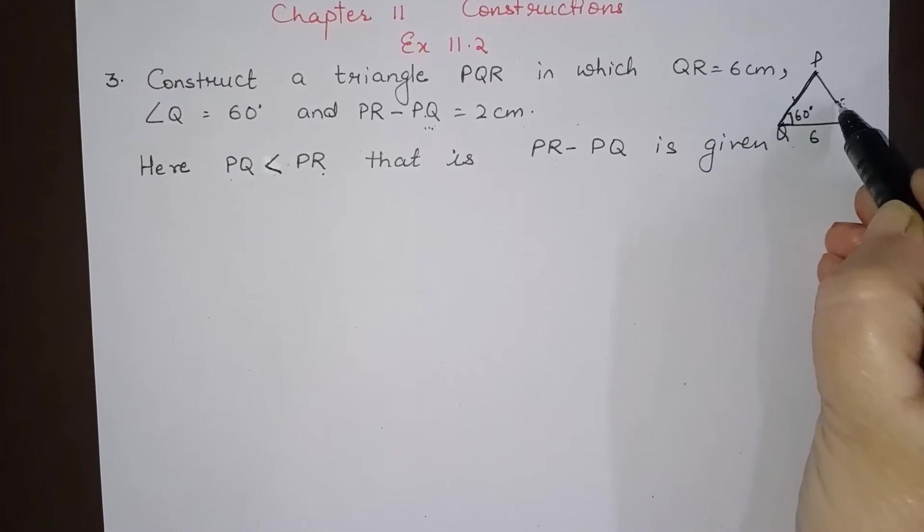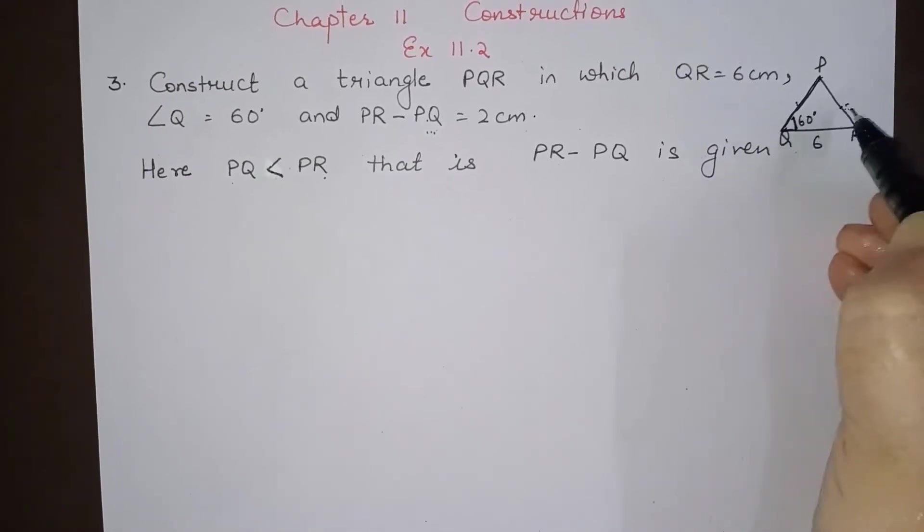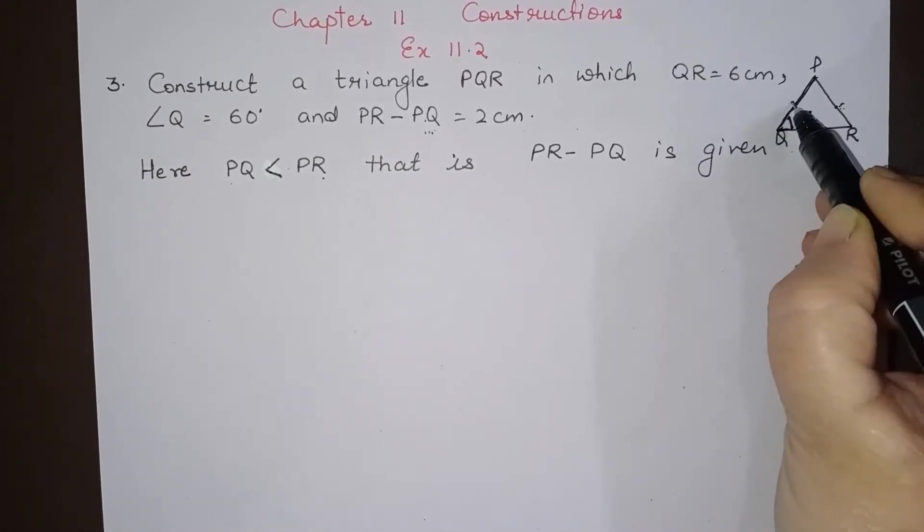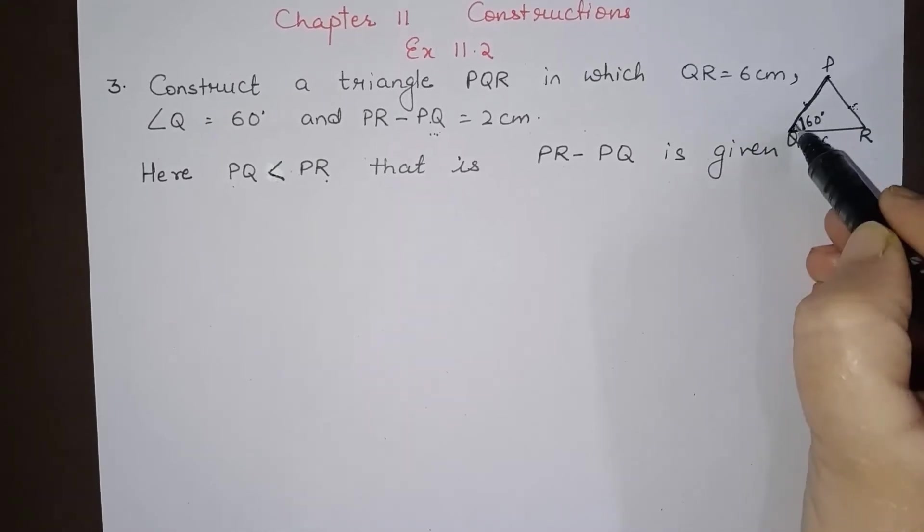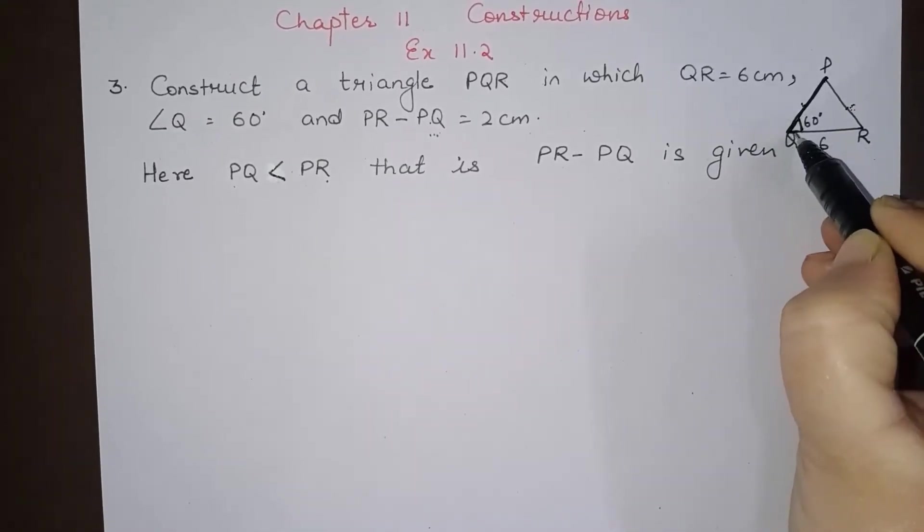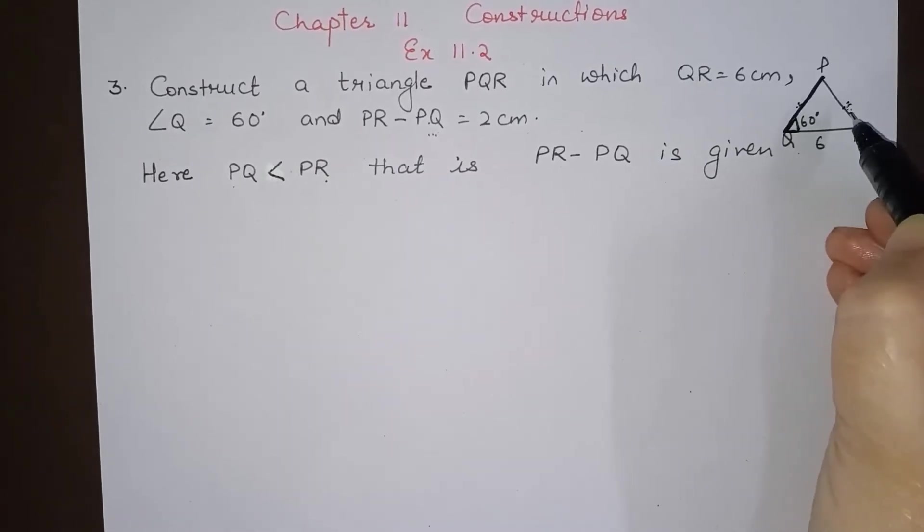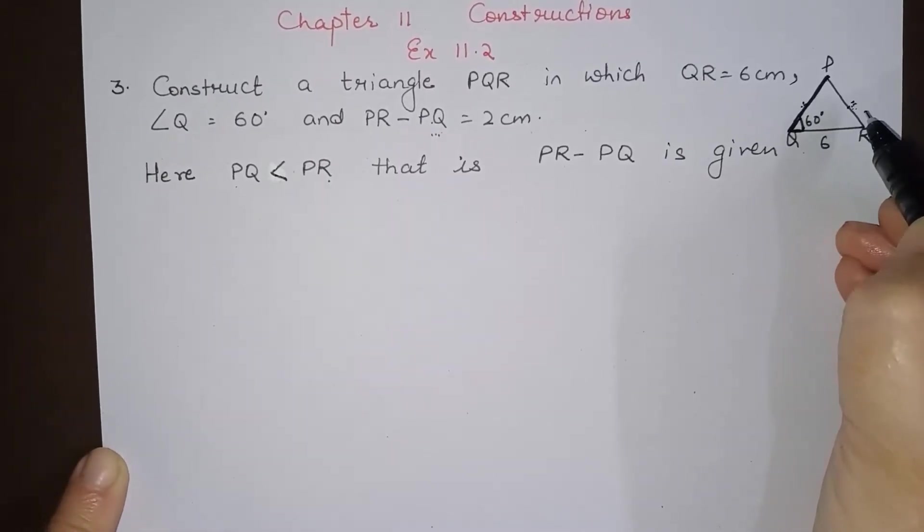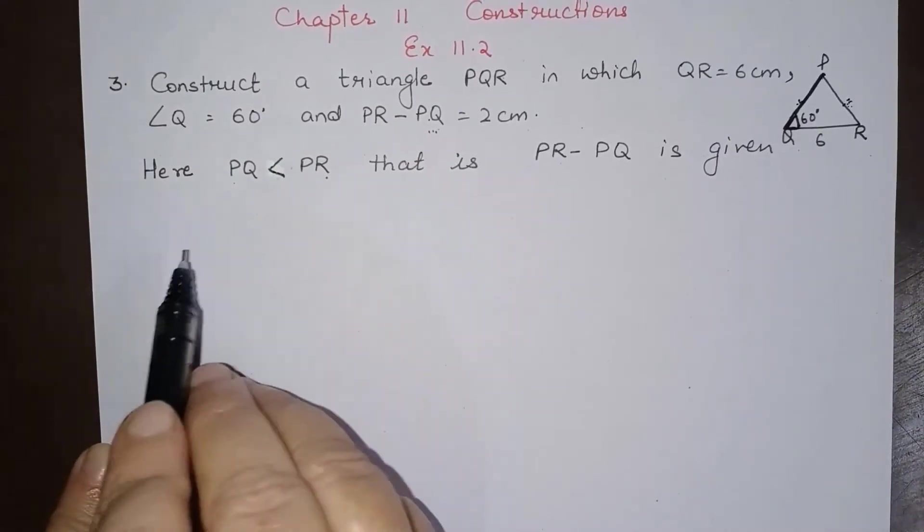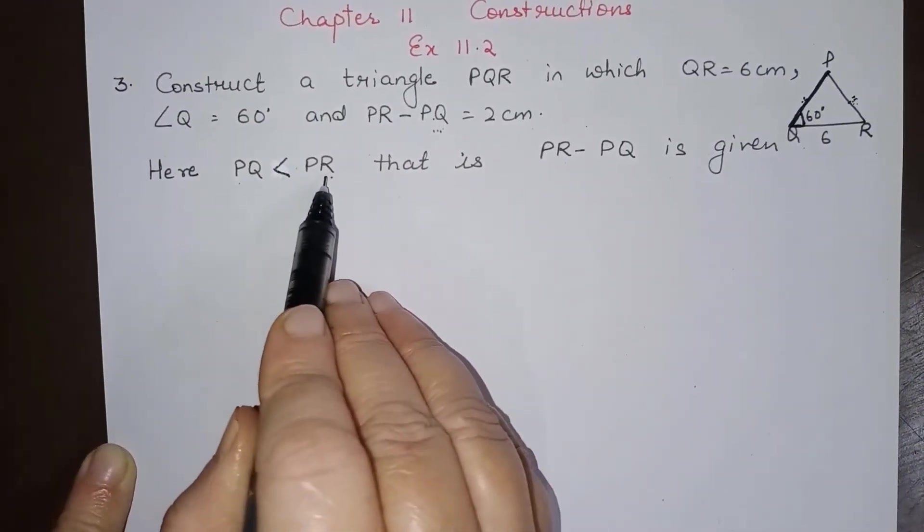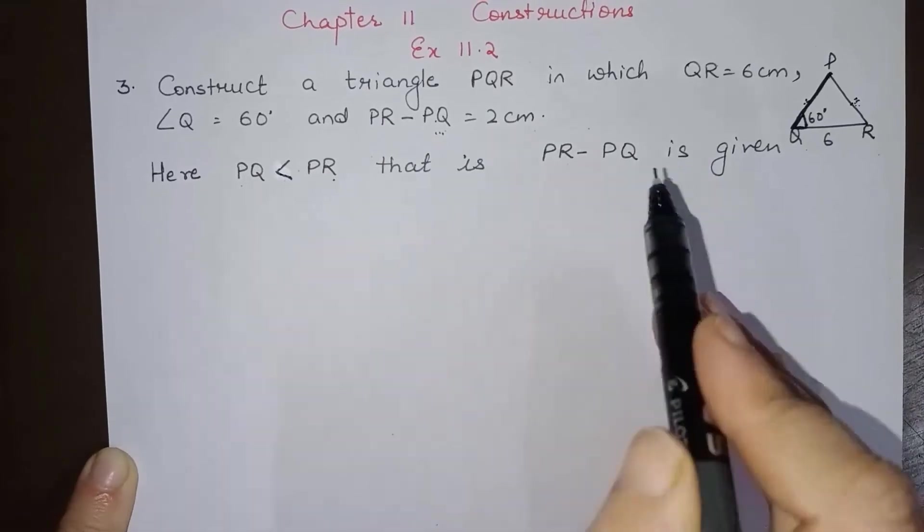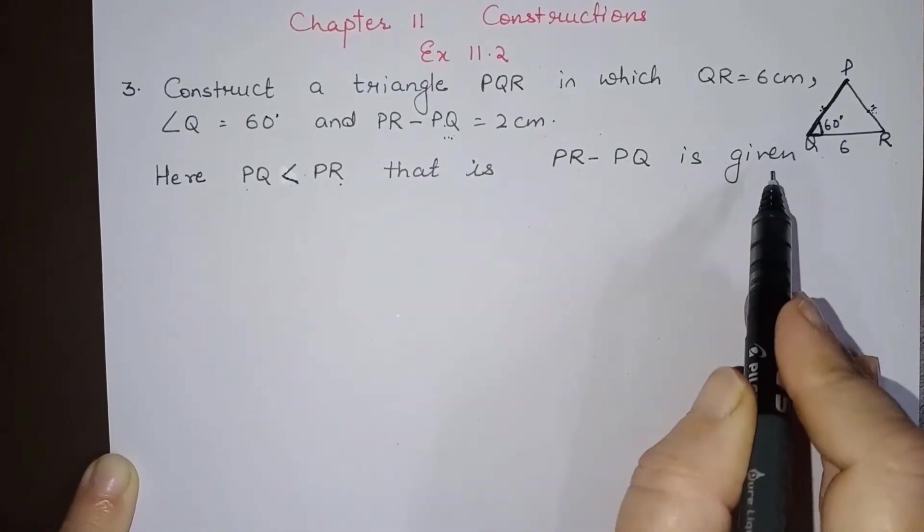Now here the side which is opposite to the base angle is greater than PQ. If you have seen the second question, there the side where base angle is made was greater than the third side. Now this question is to be done differently. Here what is given is PQ is less than PR, that is PR minus PQ is given. So let us see how to do this question.